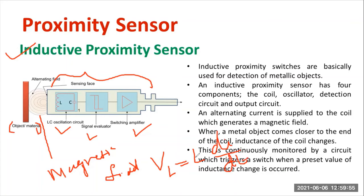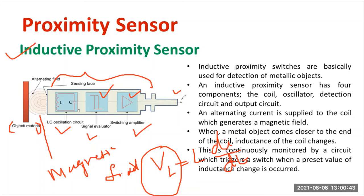As the inductance changes, the voltage also varies. Whenever there are changes in inductance, we know the object is very near to the sensor. The signal is passed through the signal evaluator, which accepts only a suitable band. The output of the signal evaluator is connected to a switching amplifier where the signal gets amplified. According to the nature of the signal, we identify whether the object is nearby or far away. This type is generally called an inductive type proximity sensor and is majorly used for detecting metal objects.